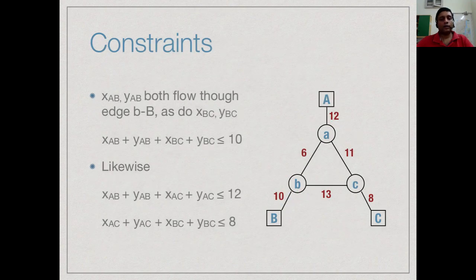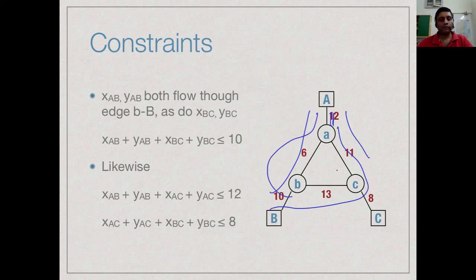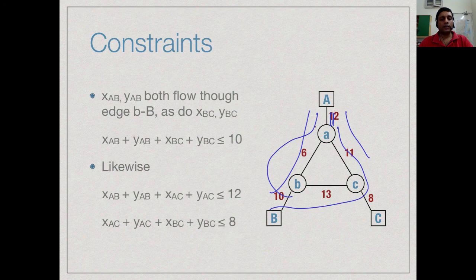Likewise, if I look at for instance, this link in the same way, I have all these different things which are coming here. I have 4 quantities, I have the direct link from A to B, the indirect link from A to B, the direct link from A to C, the indirect link from A to C and they all must add up to at most 12.